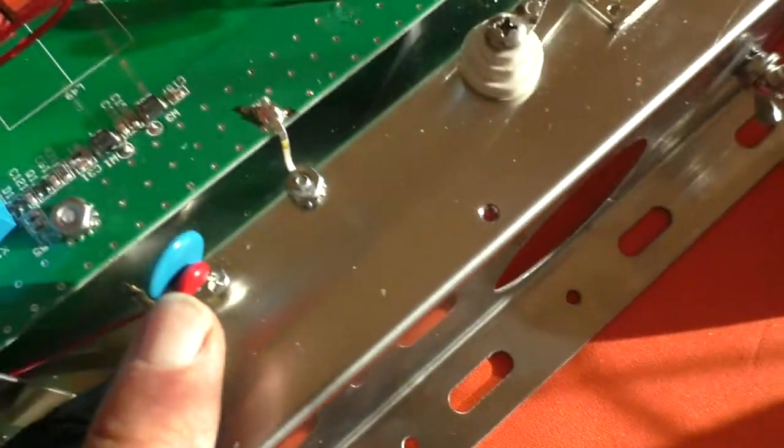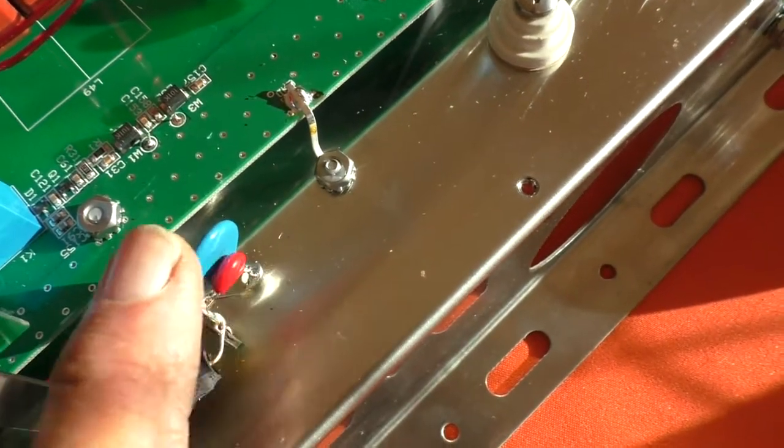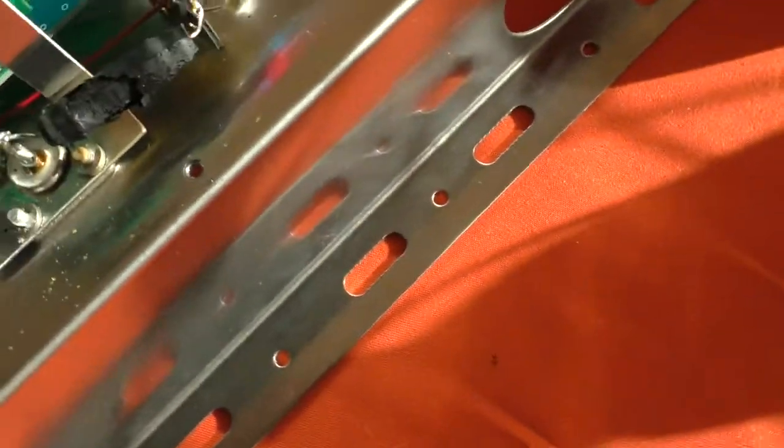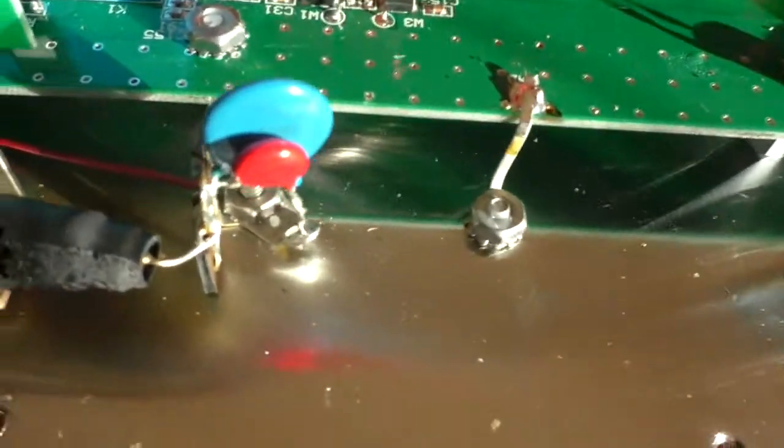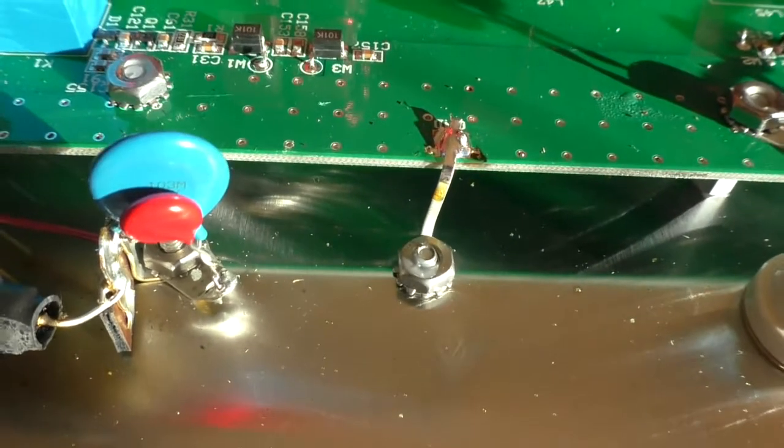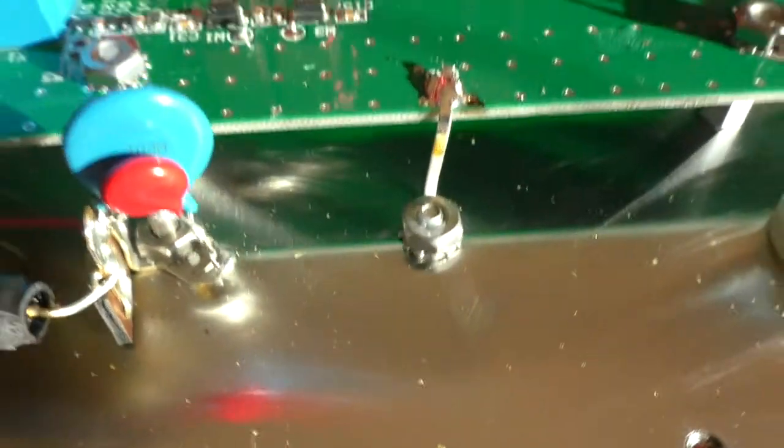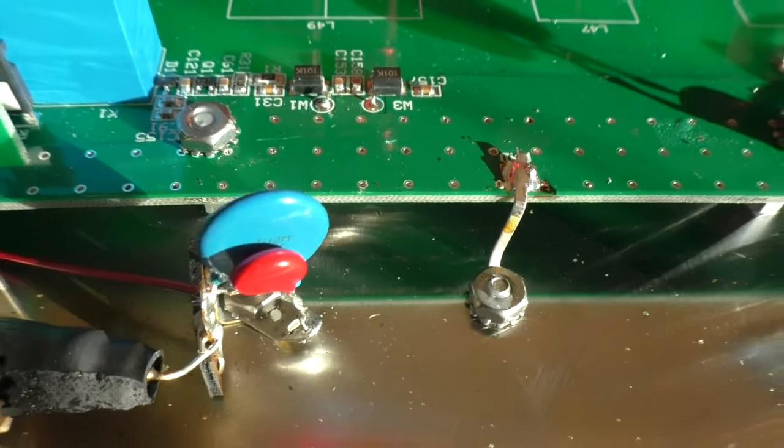OK, got an RF choke, got a couple of things here that go to chassis. So it's always possible that one of these devices is faulty. Although it does read like a diode.